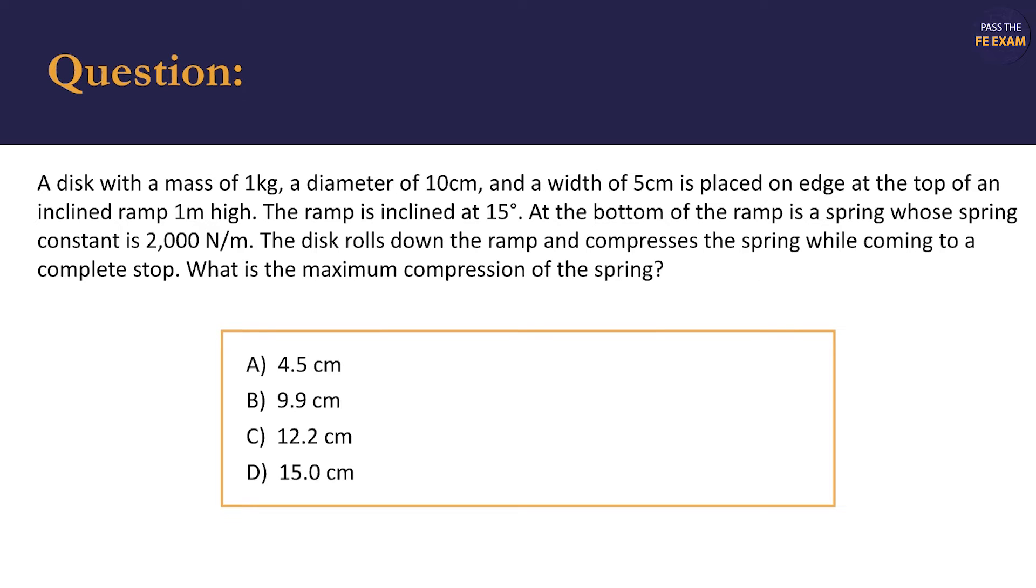A disc with a mass of 1 kg, a diameter of 10 cm, and a width of 5 cm is placed on edge at the top of an inclined ramp 1 m high. The ramp is inclined at 15 degrees. At the bottom of the ramp is a spring whose spring constant is 2,000 N/m. The disc rolls down the ramp and compresses the spring while coming to a complete stop. What is the maximum compression of the spring?